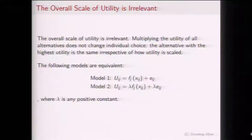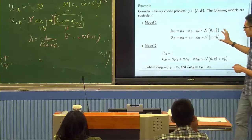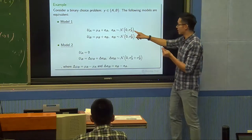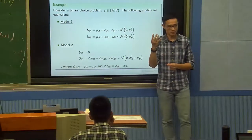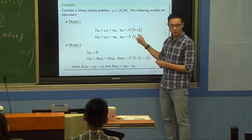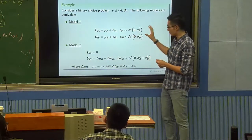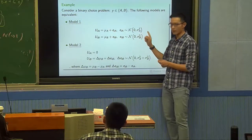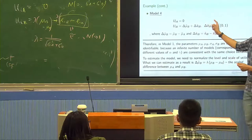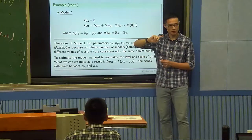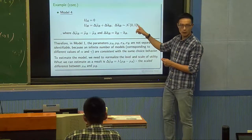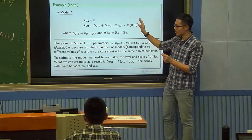Now we're ready to introduce our first discrete choice model. Different discrete choice models correspond to different specifications of the distribution of the error term. The first model is called the probit model. The probit model is a discrete choice model where the error term has a joint normal distribution. If we say the error e is jointly normal, that's a probit model.